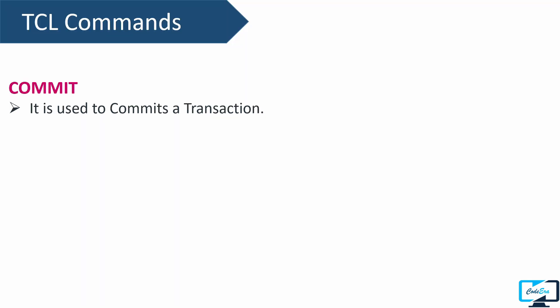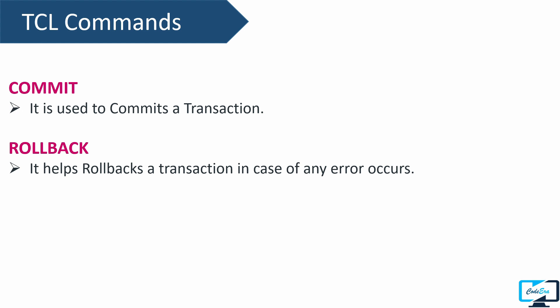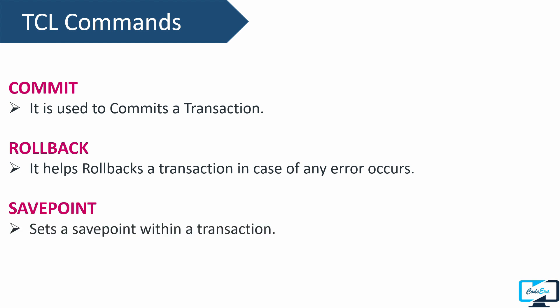The first TCL command is COMMIT, which ensures that changes are made permanent in the database — it saves work done permanently. The next command is ROLLBACK, used to restore the database to its original state since the last commit was done. The last command is SAVEPOINT, used to save the transaction temporarily at certain points. If you roll back the transaction, it will get rolled back only up to the last savepoint. Don't worry if you are confused about TCL commands — in this video series we will work on them and you will get a better understanding.